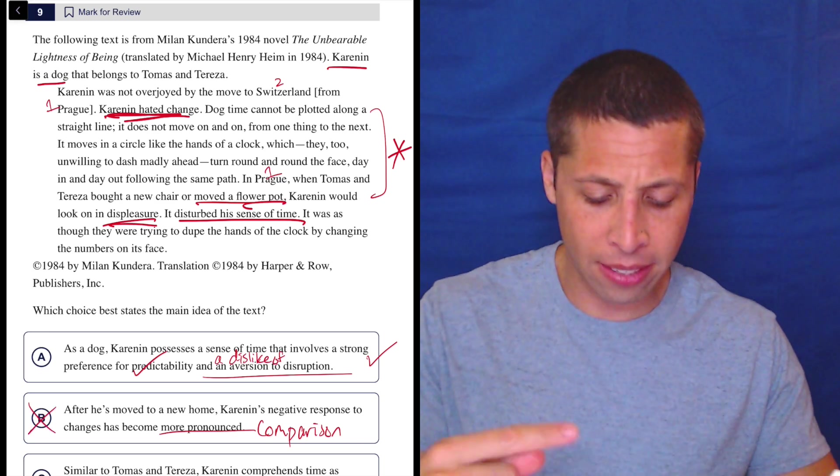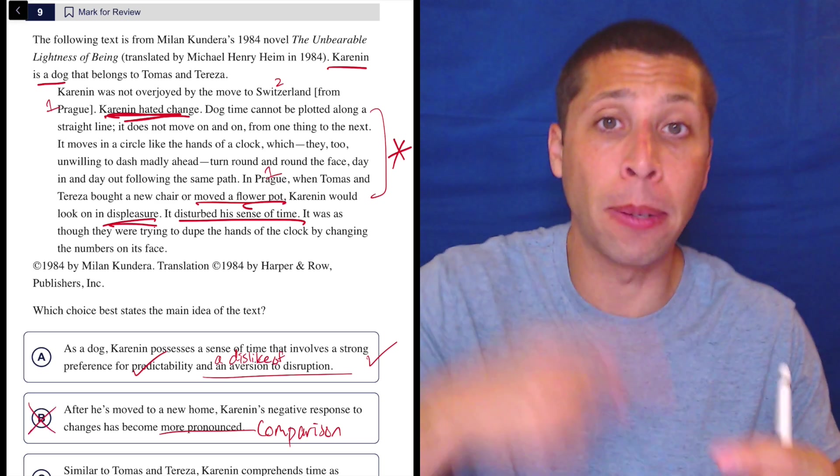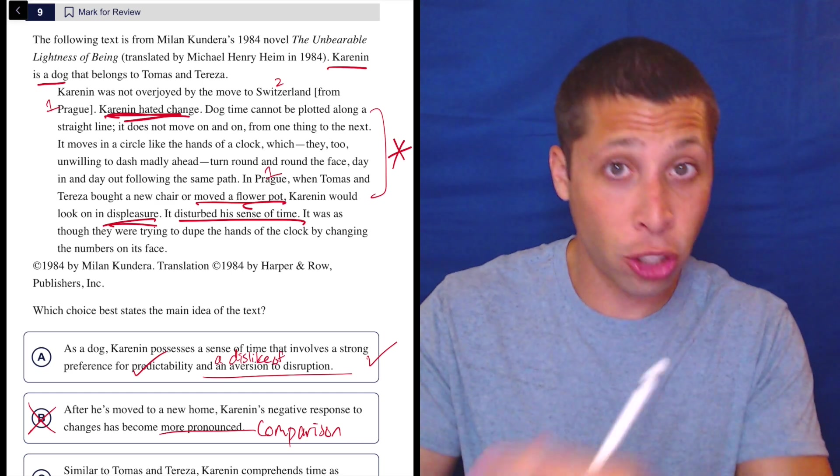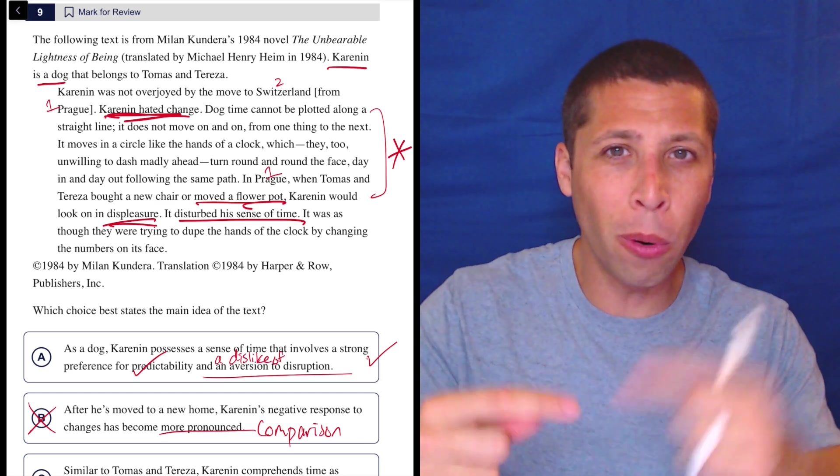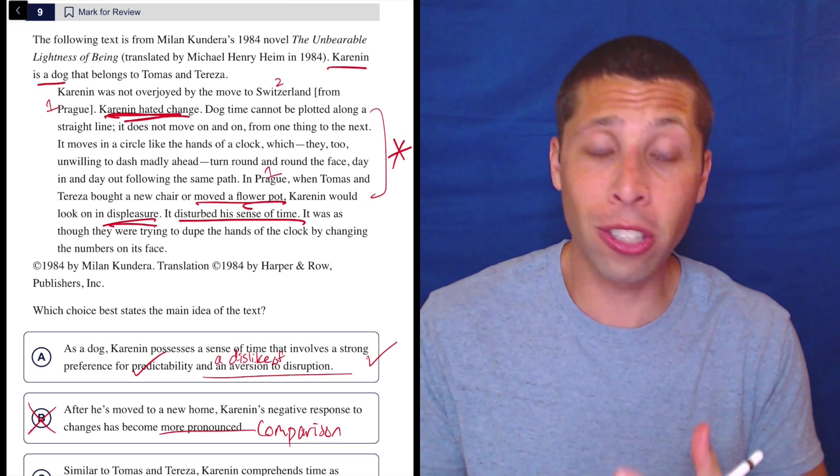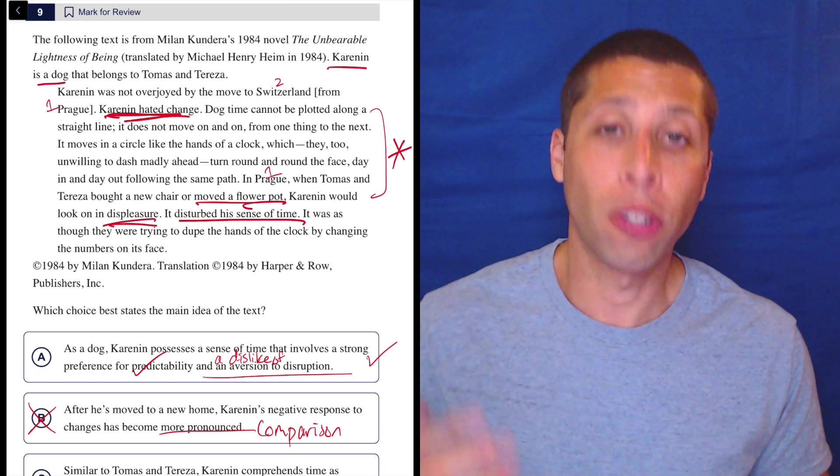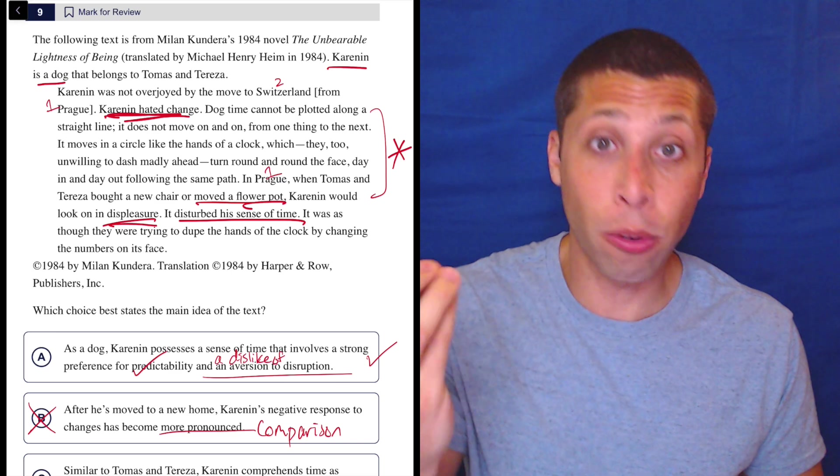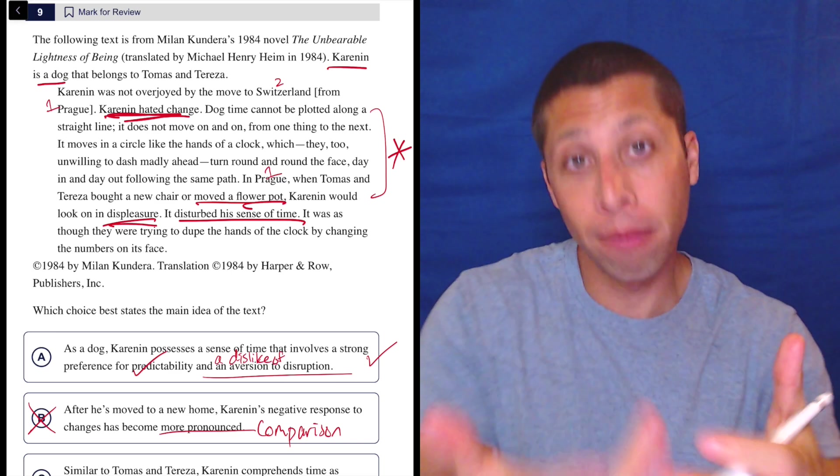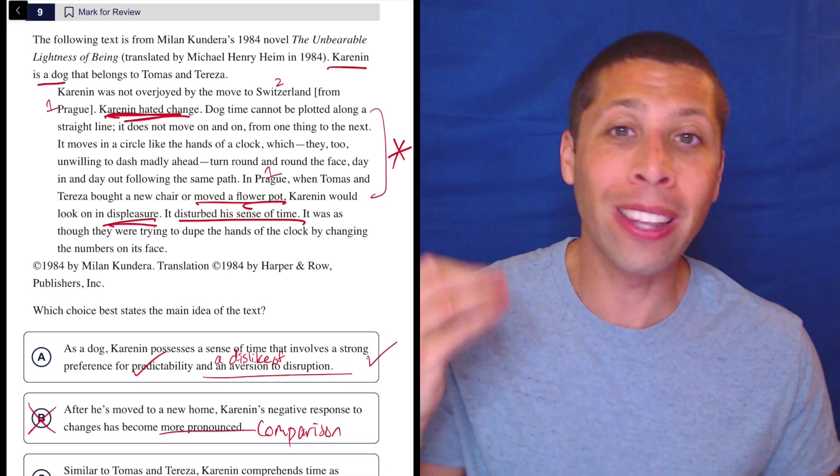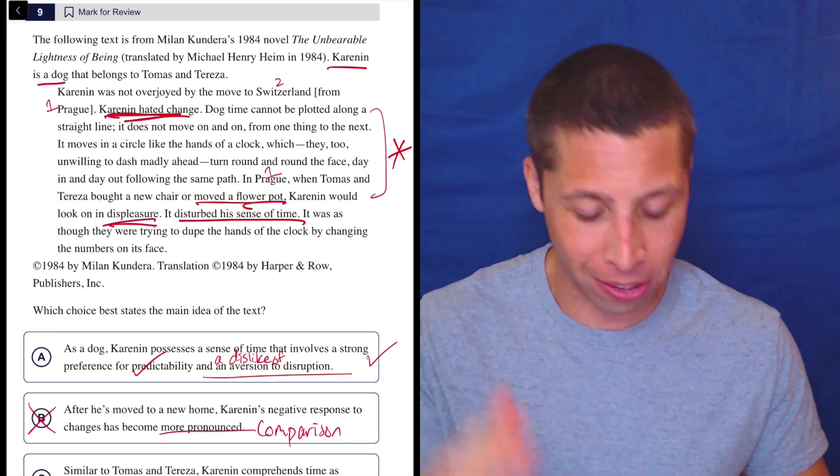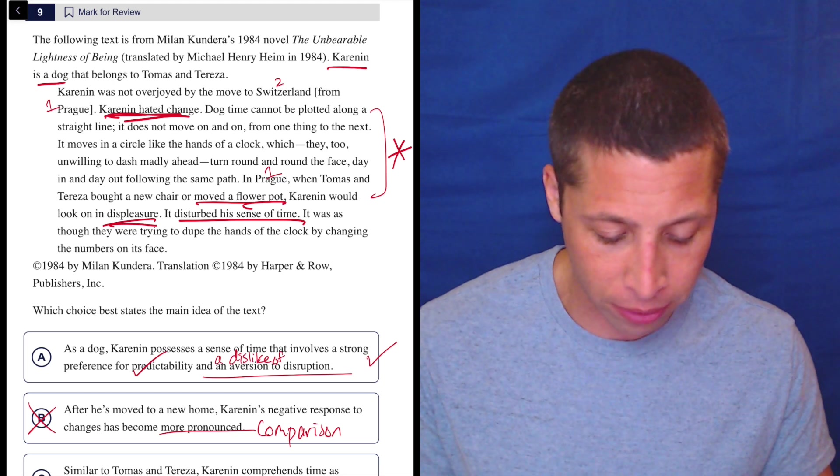So B is taking choice A and amplifying it, going even further. It's saying not only does this dog hate change, but the dog also is more or less hating of change in different places. The passage isn't going that far. And usually this is how trap answers go on the SAT. They take the right answer and they add something on top of it. They add another layer and they're hoping you don't pay attention to that layer. Or you like that layer because you're like, oh, it's more detailed. But more is not better. So we got to be careful there. A is definitely better than B. B is adding something we don't have proof of.